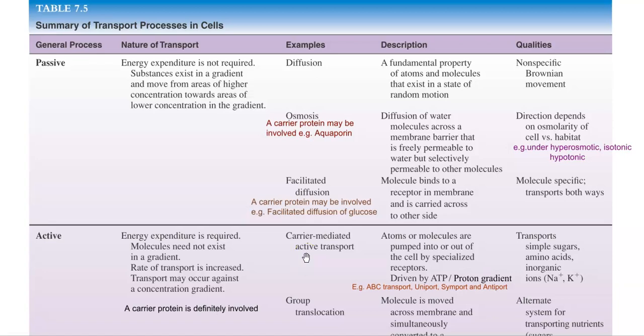The next type is osmosis — the diffusion of water molecules across a membrane barrier that is freely permeable to water but selectively permeable to other molecules. The direction of movement depends on the osmolarity of the cell versus the osmolarity of the environment. Osmosis can occur under hyperosmotic, isotonic, and hypotonic conditions. Sometimes osmosis is also facilitated by a carrier protein embedded in the membrane; the carrier protein involved in water transport is referred to as an aquaporin.